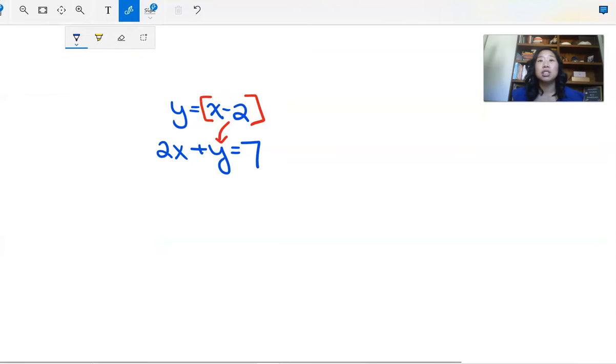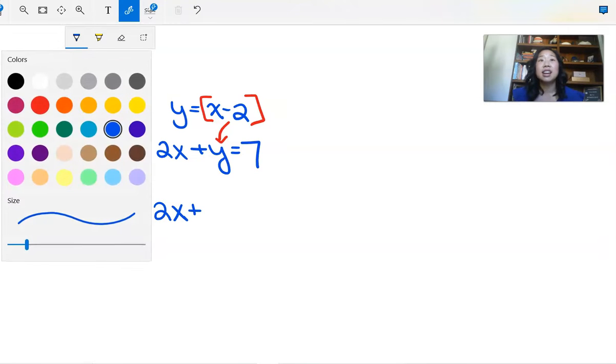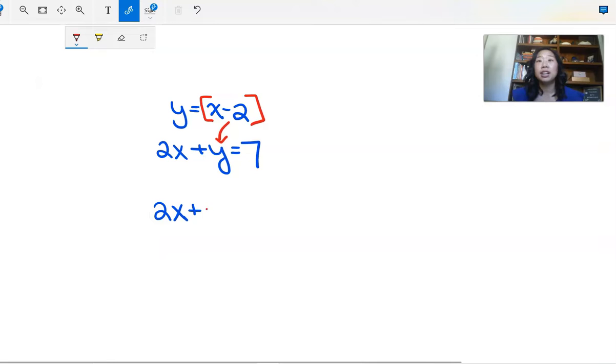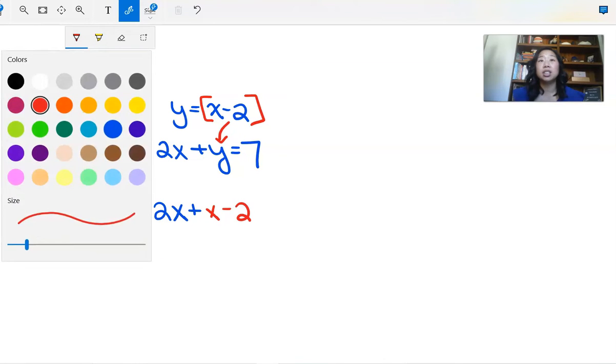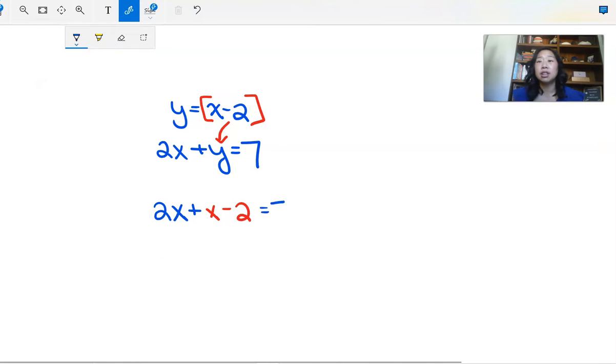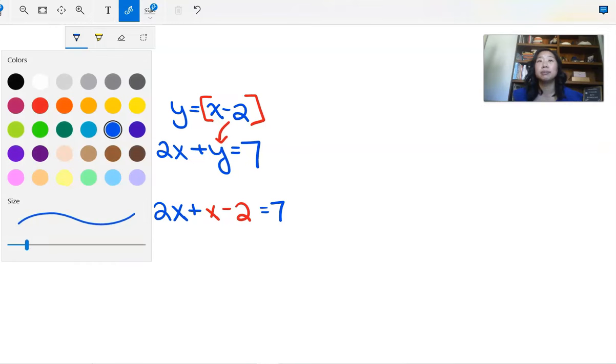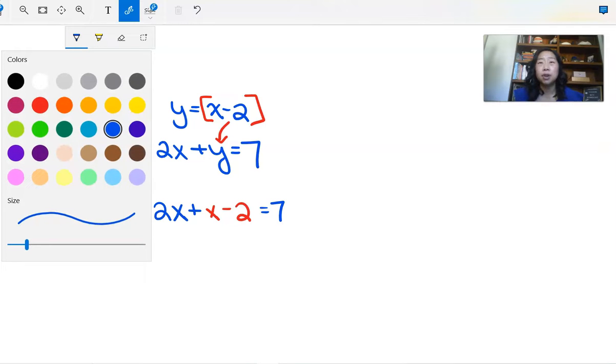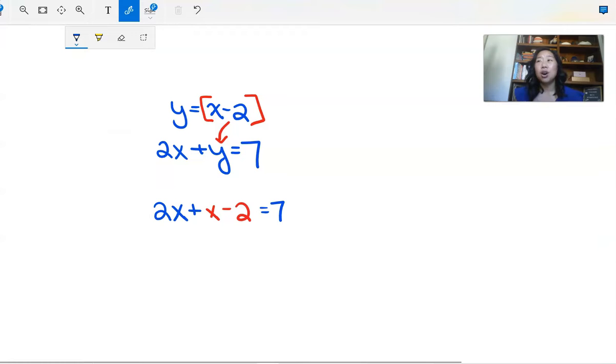So I like to show my students that we're just literally copying everything else down. And instead of y, we're going to put in x minus 2. I like to use colors so that they can see. If you don't have color, it's okay. But if it's possible to show the colors, I think that is important. So they can visually see where did this come from? Where did you plug in?